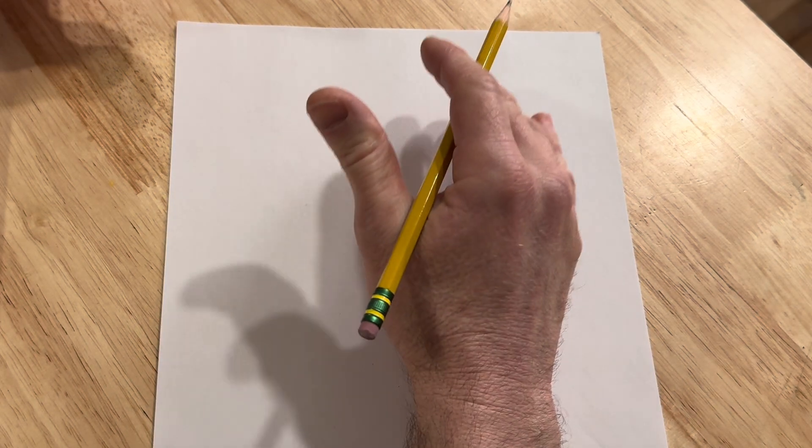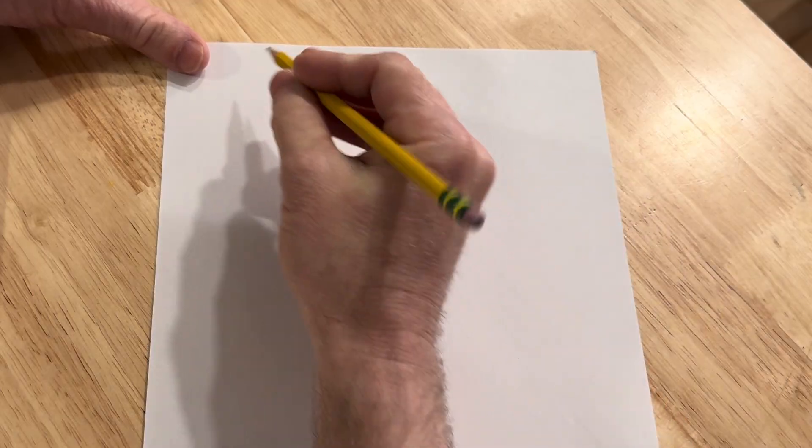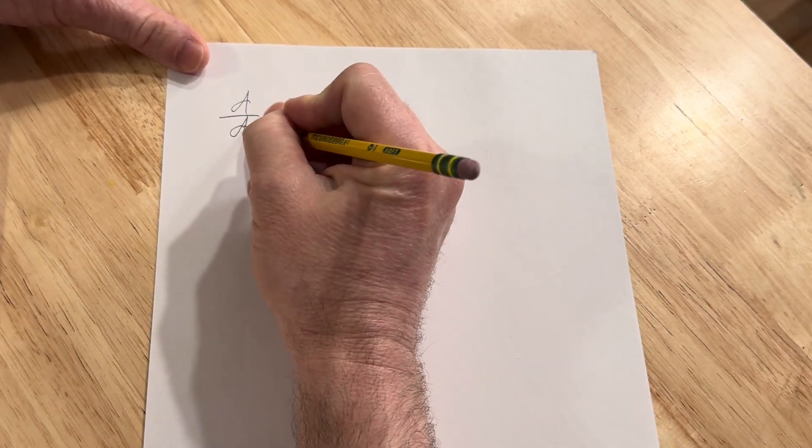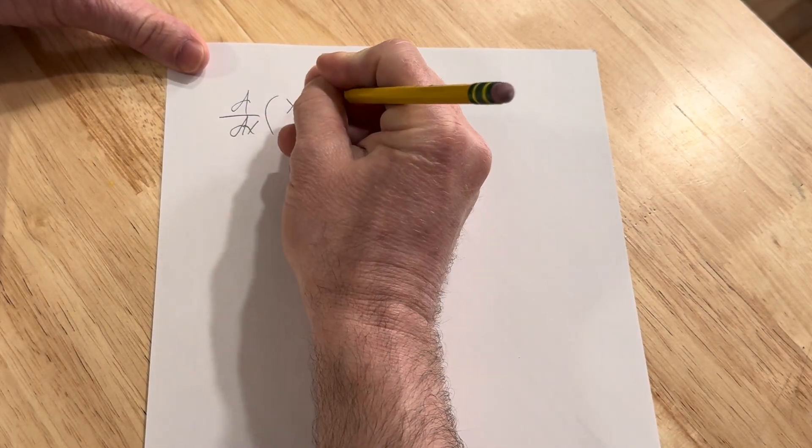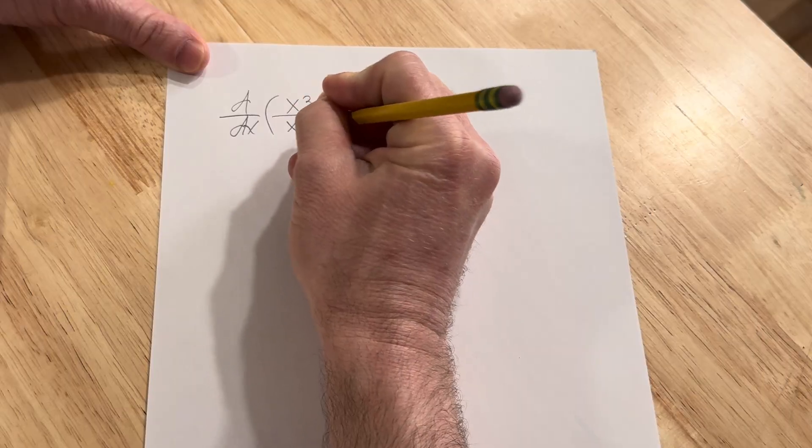Hi everyone, in this video we're going to do a very simple example of the quotient rule. So the question is to find the derivative, d/dx, of x squared over x plus 1.